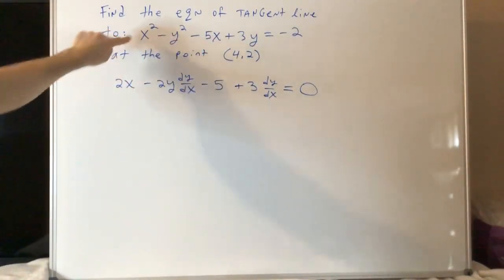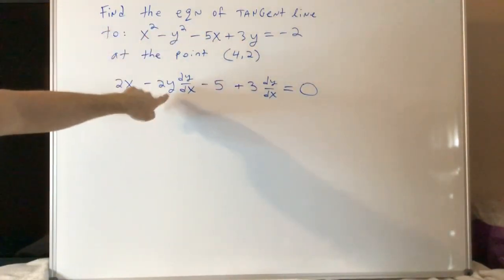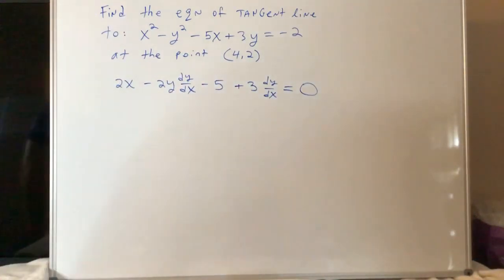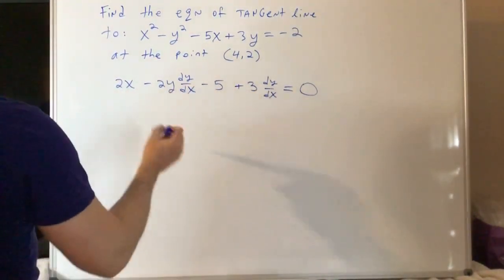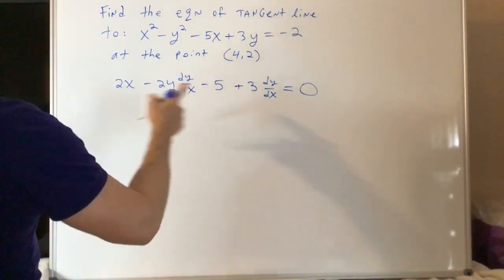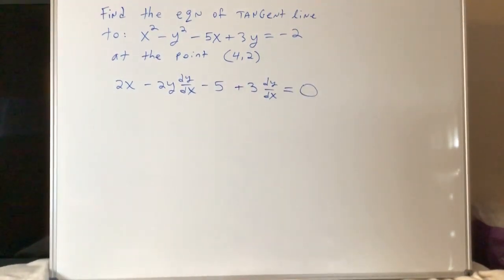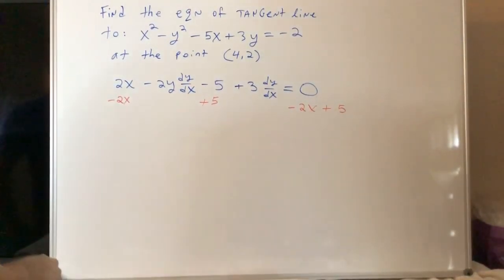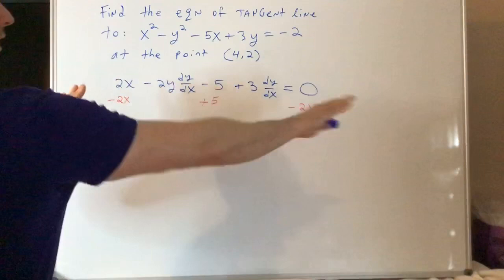If it's got an x, do it normal. If it's got a y, you just throw on a dy/dx. Constant. The derivative of that constant is 0. Now I'm going to get all my dy/dx's on one side. And I'm going to have everything else on the other side. Okay, so I'm setting it up.